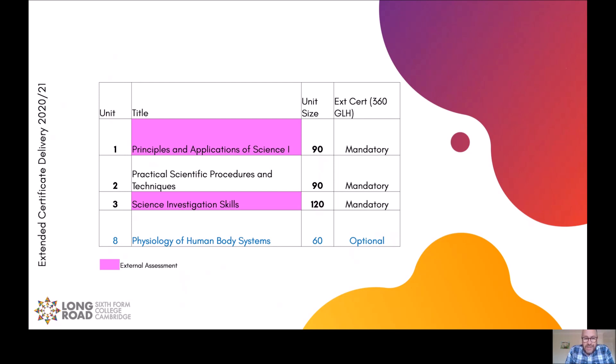And the last unit, which is an internally assessed unit because it's white, this is optional. This is a unit that we feel as though balances out the course a little bit because it's biology based. It also helps students going on to perhaps do sports science or physiotherapy or perhaps nursing. So it's a good core biology unit.